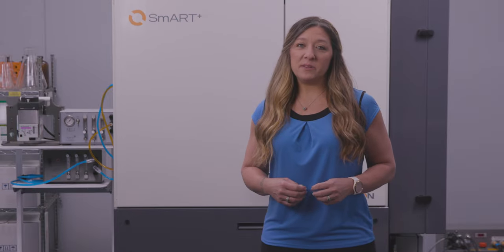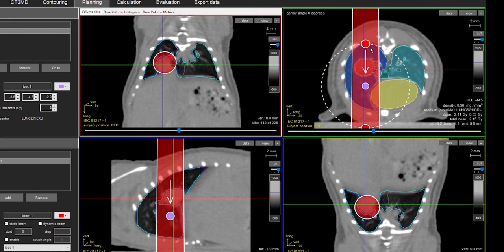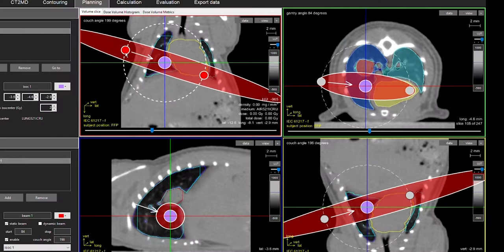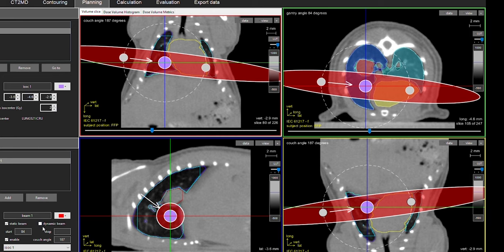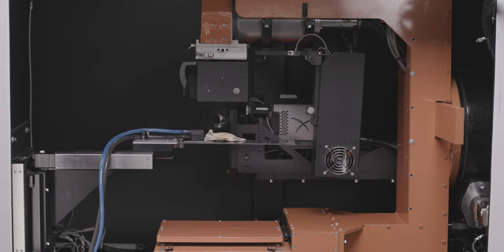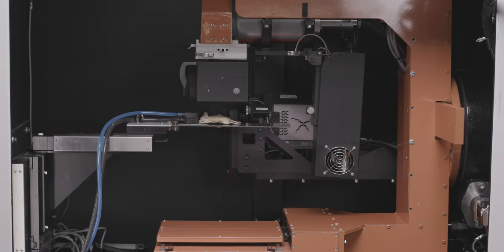Smart Advanced Treatment Planning featuring state-of-the-art kV-based Monte Carlo calculation algorithms can devise treatment plans with gold standard accuracy for static beams, arcs, and non-coplanar treatments across single and multiple isocenters.